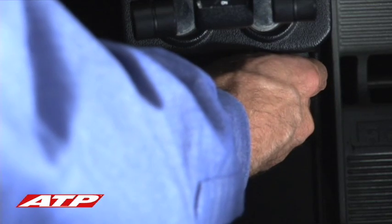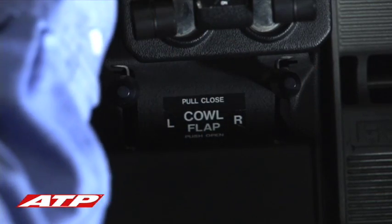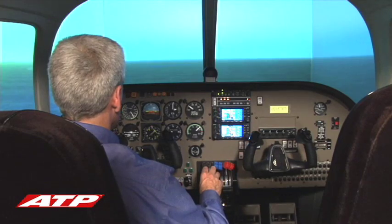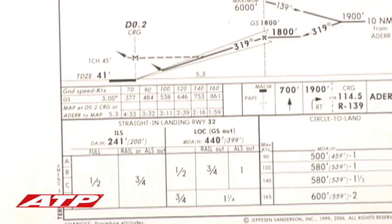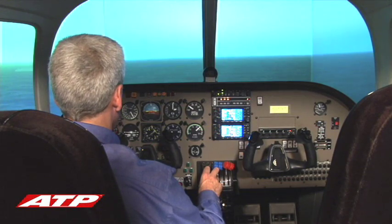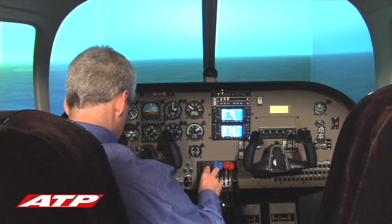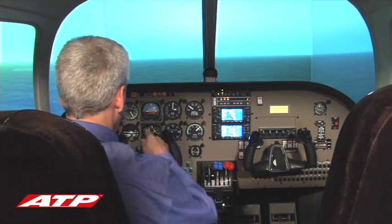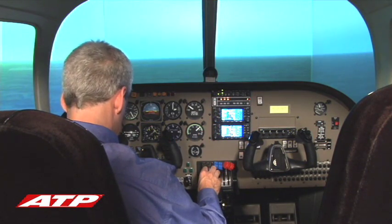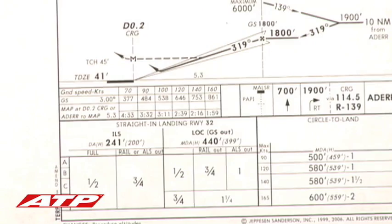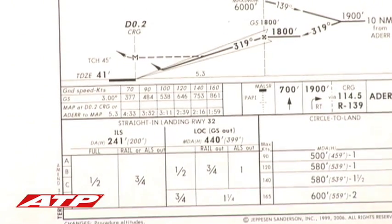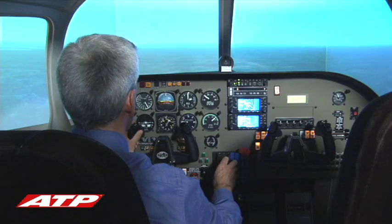At the completion of the approach checklist, the pilot announces checklist complete and reviews all the callouts that will be made on the approach. The callouts will be: localizer alive, glide slope alive, gear down before landing checklist, blue line GUMP, gear down stabilized, 100 to go, and minimums.